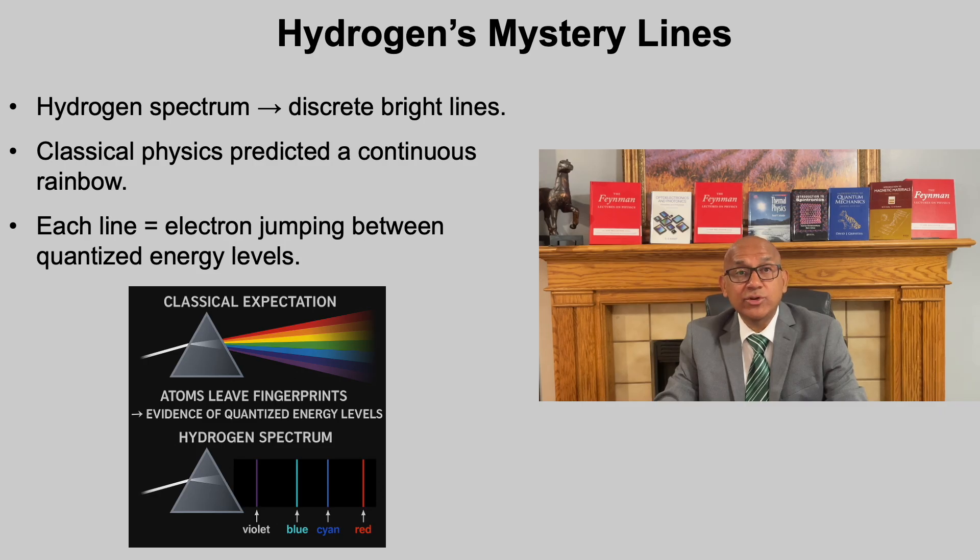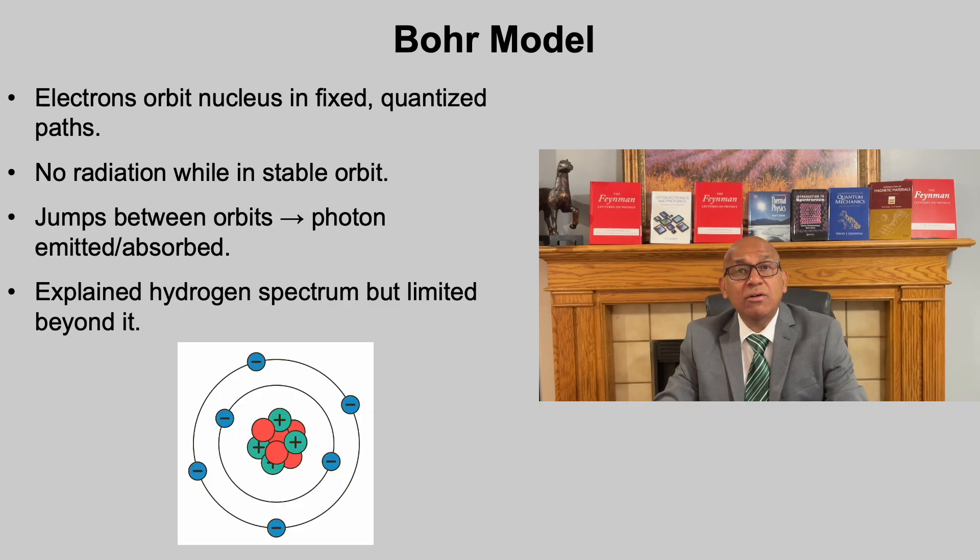Hydrogen's discrete spectrum was one of the strongest pieces of evidence against classical physics, pointing directly towards quantum theory. To solve this mystery, Bohr proposed a revolutionary picture of the atom. Electrons circle the nucleus in stable quantized orbits without radiating energy. This solved a huge puzzle of classical physics, why atoms don't collapse as electrons spiral inward. When an electron jumps from one orbit to another, the energy difference is released or absorbed as a photon, explaining the sharp spectral lines of hydrogen. This was a triumph for early quantum theory.